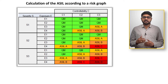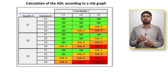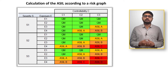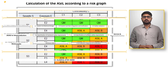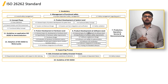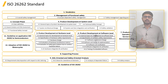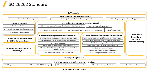Within the ASIL risk graph, ASIL A represents the lowest level of safety requirement, while ASIL D represents the highest level of safety requirement. ISO 26262 outlines guidelines that must be followed by all stakeholders involved, including OEMs, Tier 1s, and Suppliers.